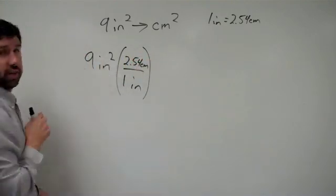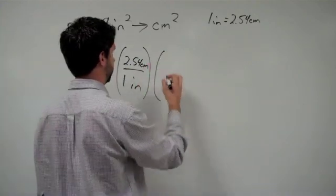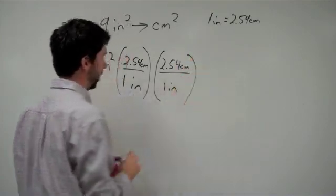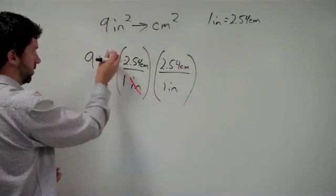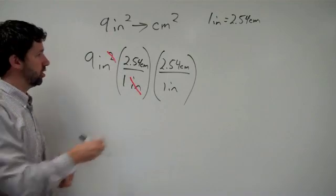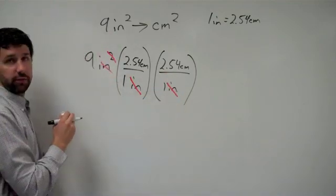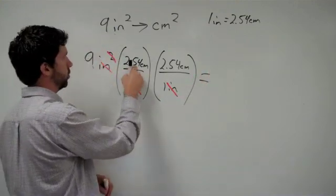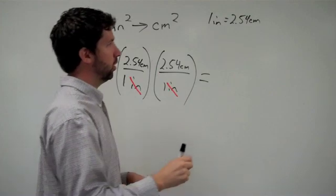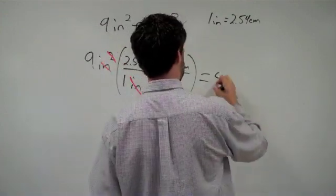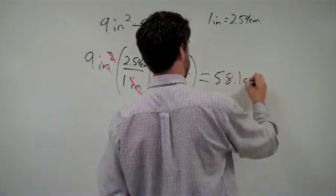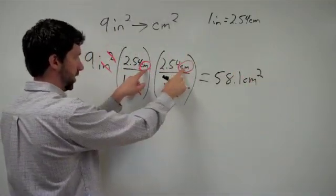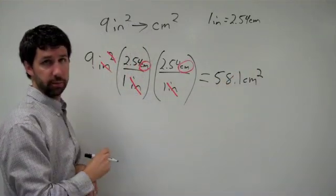But again, I've got inches squared. So I need to do this twice because now I've got this inch canceling out with one of those inches. I've got the second inch canceling out with the second of those inches. So what I end up with is 9 times 2.54 times 2.54, which equals 58.1 centimeters squared. Note that we're left with centimeters and centimeters, which when multiplied together is centimeters squared.